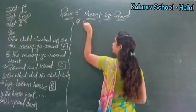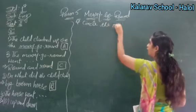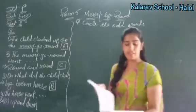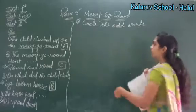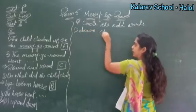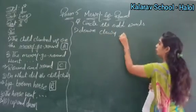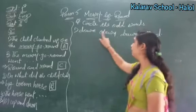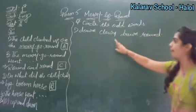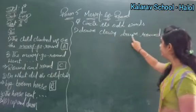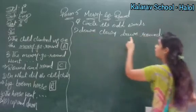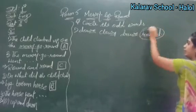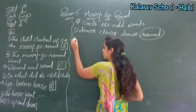Now see what is given — circle the odd word. You have to circle the odd word. Five sets are given to you. First set: down, clown, brown, and round. You can see that down, clown, and brown all end with the letters O-W-N and their pronunciation is also the same. So 'round' is the odd word — you will circle round.